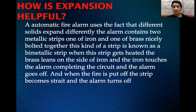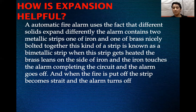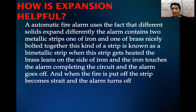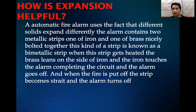Let's see how expansion is helpful to us. In an automatic fire alarm, it uses the fact that different solids expand differently. The alarm contains two metal strips — one of iron and one of brass — which are bolted together. This kind of strip is known as a bi-metallic strip. When this strip gets heated because of fire, the circuit completes because brass expands more and leans on top of the iron, making the iron touch the circuit and complete it. Because of this, the fire alarm goes off and people are alerted that there is a fire. When the fire is put out, the strip cools down, becomes straight again, and the alarm turns off.